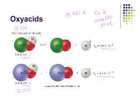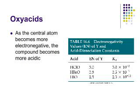To generalize: as the central atom becomes more electronegative, the compound becomes more acidic. We have a slightly larger data set here — going from HClO to HBrO to HIO. As the electronegativity drops, the Ka values get significantly smaller, confirming this pattern.